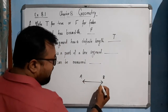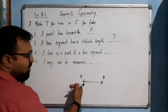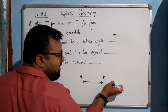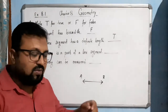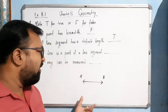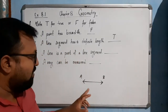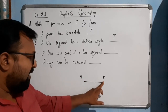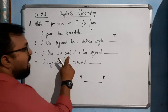But if it is a line, point A is moving endlessly in the left direction and point B is moving endlessly in the right direction. We can't measure it because there is no starting or end point. For a line, we can't measure the length, but for a line segment we can, because it has two definite end points. So we can measure the length of line segment AB — it is true.